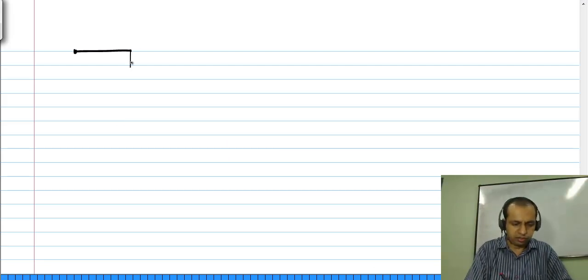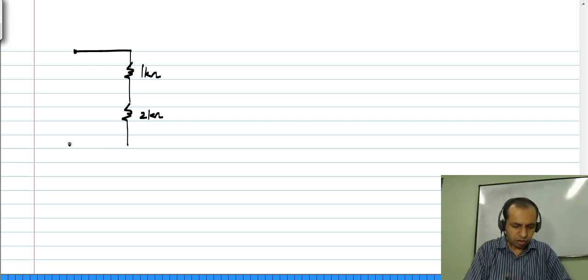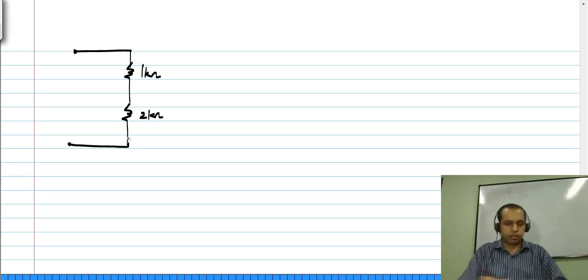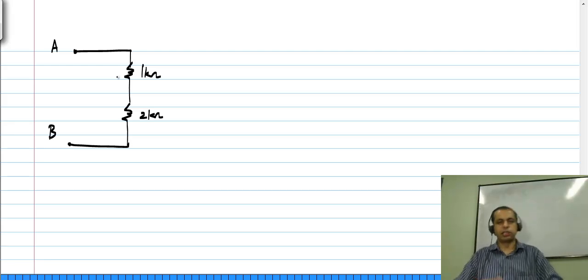I will show another simple example with control sources. Let us say this is A and B and I will still ask the same question, what is the resistance between A and B, but the actual question could be something else.